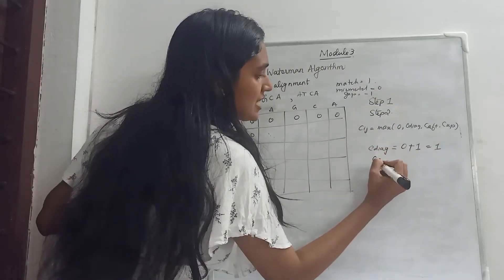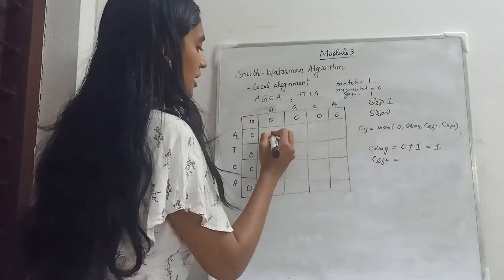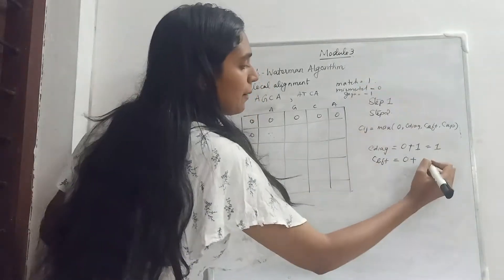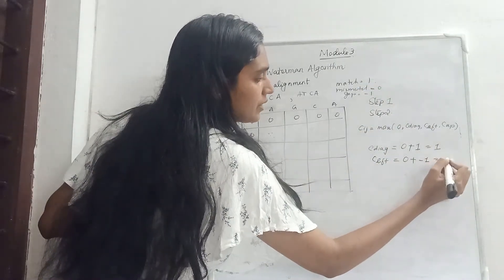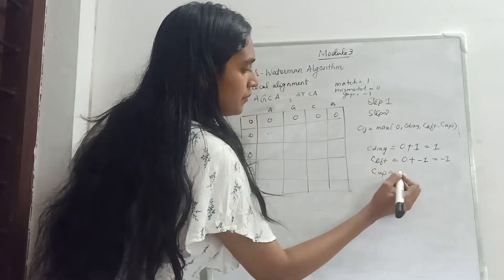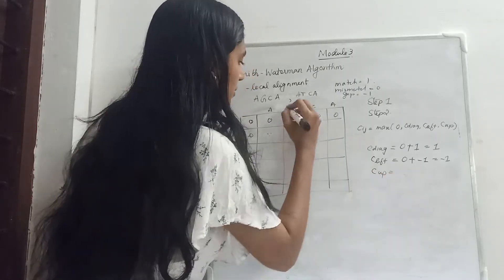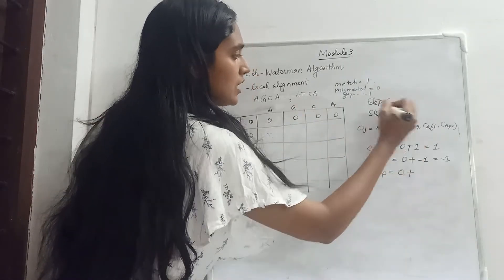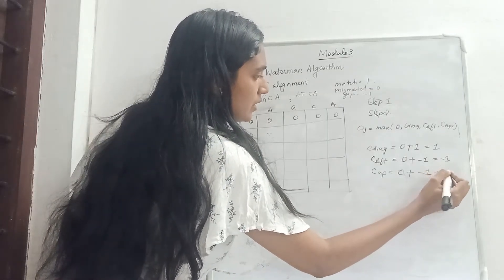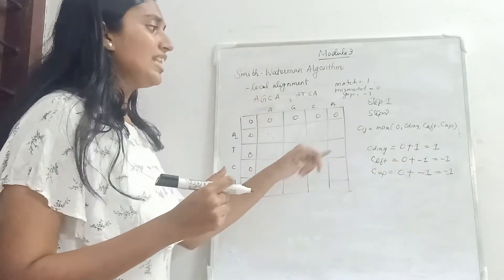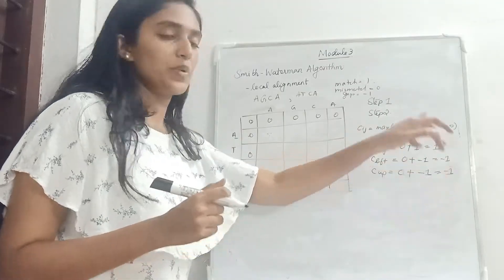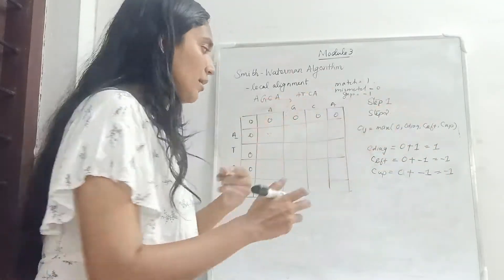C_left will be the previous left element 0 plus gap penalty minus 1, and C_up will be the previous up element 0 plus gap minus 1. So the values are: minus 1, minus 1, minus 1, minus 1.